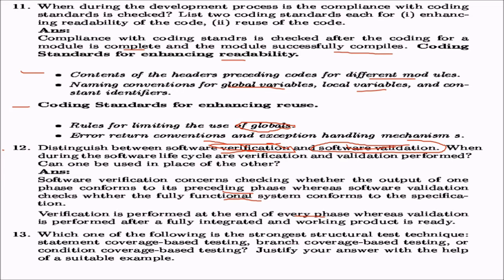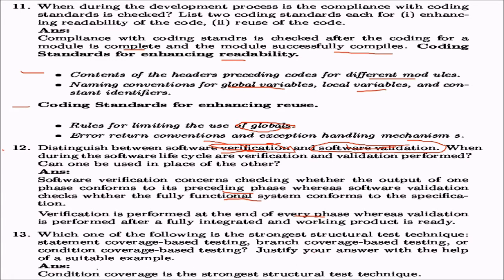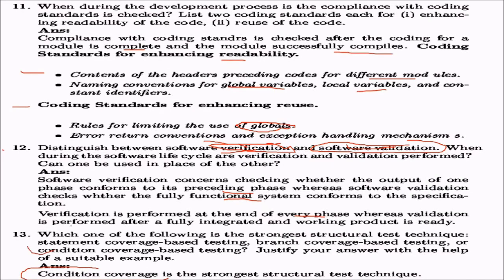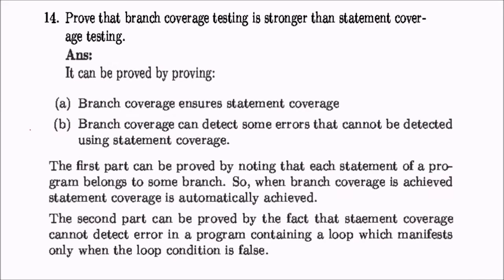Which is the strongest structural testing technique — statement coverage, branch coverage, or condition coverage? The answer is condition coverage. Branch coverage is stronger than statement coverage because each statement belongs to some branch, so when branch coverage is achieved, statement coverage is automatically ensured. Additionally, branch coverage can detect errors that statement coverage cannot, such as errors in loops that manifest only when the loop condition is false.